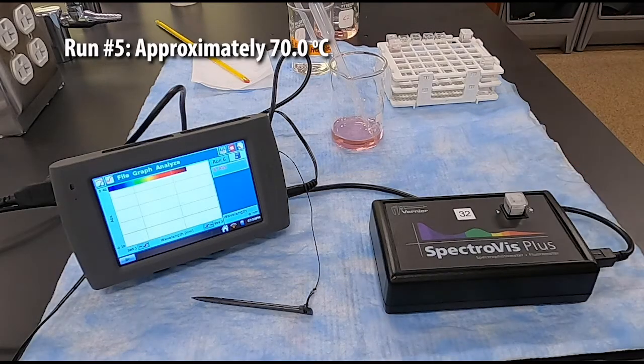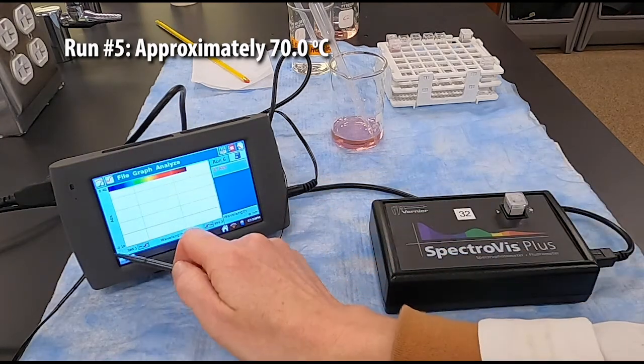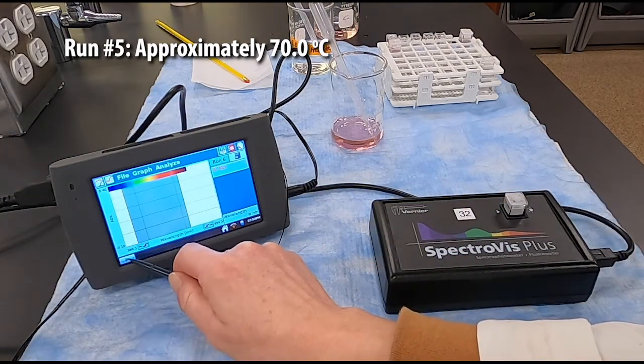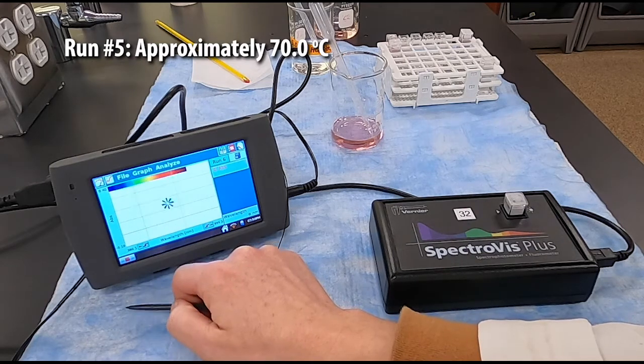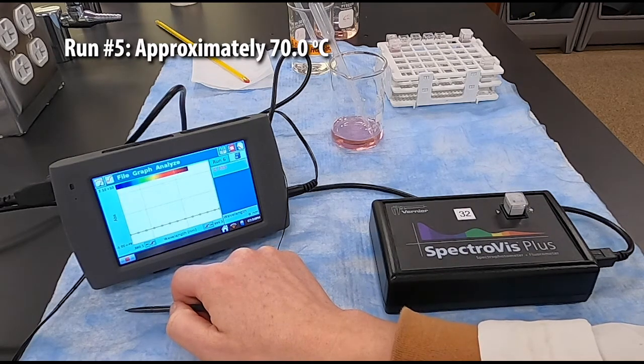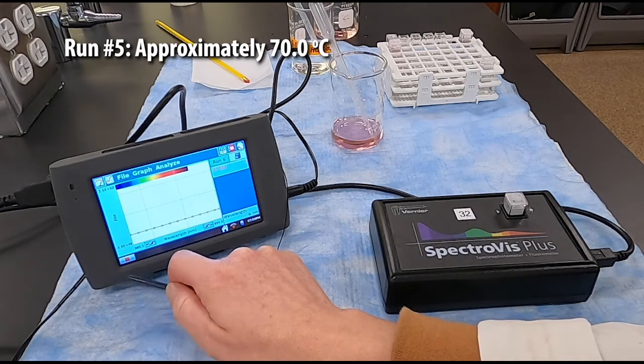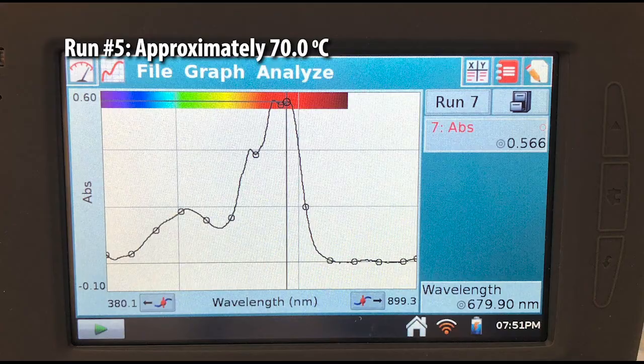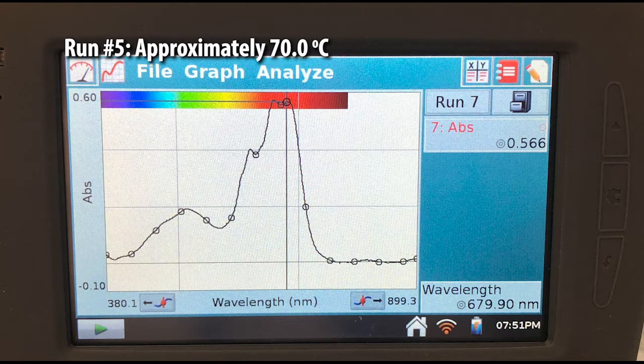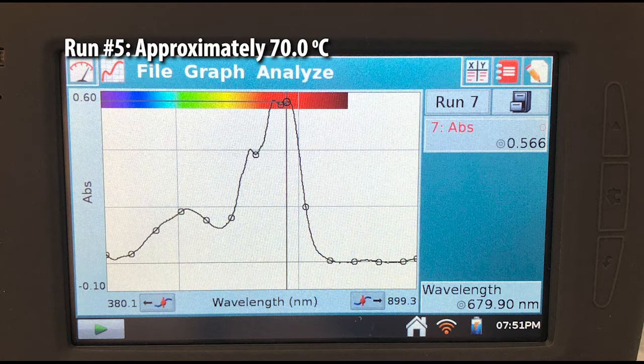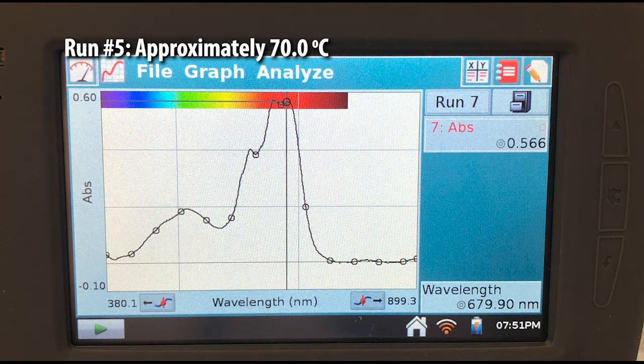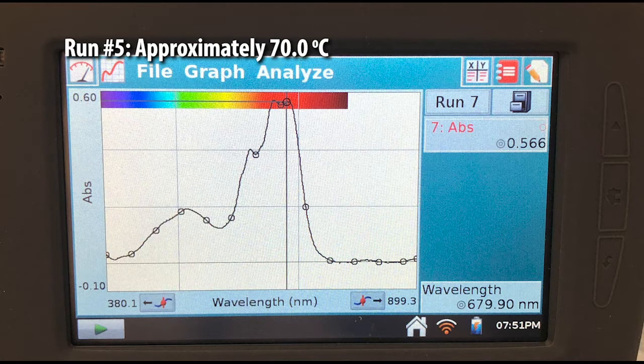While we're waiting for the spectrum of this last sample, let's recap what data you should have collected in your lab notebook. For each of the five runs, you should have the temperature in Celsius and the absorbance of that second product peak written down. You should have the lambda max of that product peak and also the mass of the empty beaker and the beaker plus the solid so that you can calculate how much cobalt-2 chloride we used. Don't forget that you'll also need the concentration of the hydrochloric acid stock solution to finish your calculations.